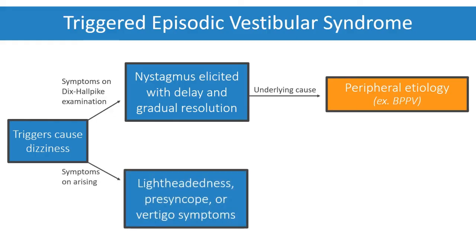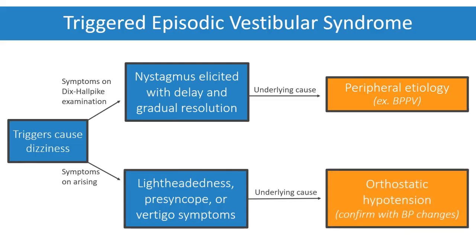If lightheadedness, presyncope, or vertigo symptoms occur only on arising, it is suggestive of orthostatic hypotension. A blood pressure drop of at least 20 mmHg systolic and 10 mmHg diastolic within 3 minutes of standing will confirm the diagnosis.